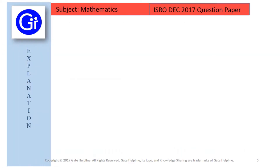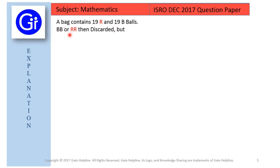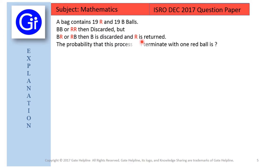Now we will see the explanation to this question. We are given a bag which contains 19 red balls and 19 black balls, and we are drawing 2 balls at a time. That can be black-black or red-red — both these balls are discarded. But if we have 1 black ball and 1 red ball, the black ball is discarded and the red ball is returned. We need to find the probability that this process terminates with 1 red ball.